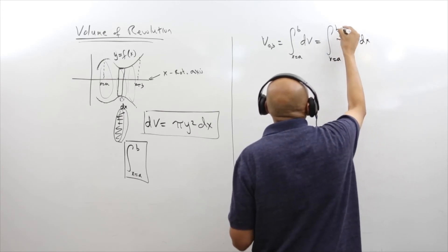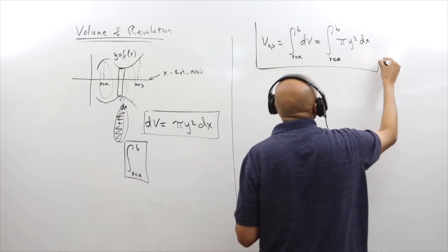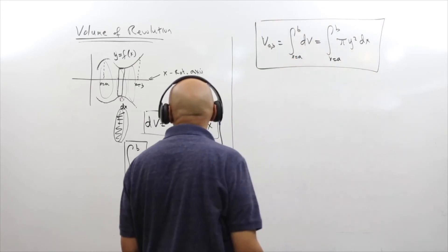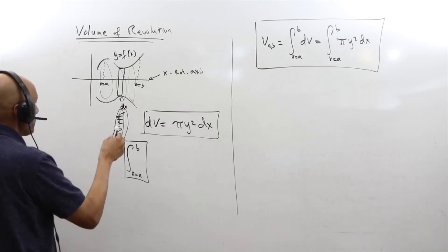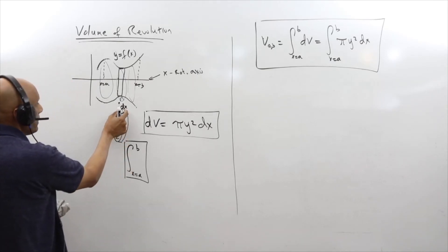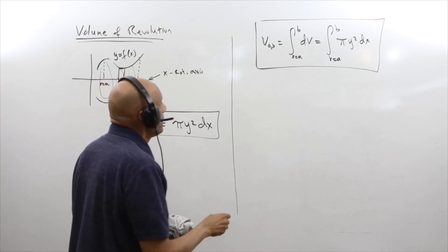And that's it. This is called the disk method. You're just summing up all of this total volume as a bunch of disks of differential thickness dx and radius of y.